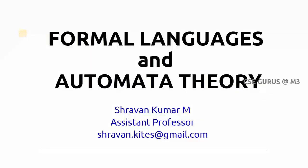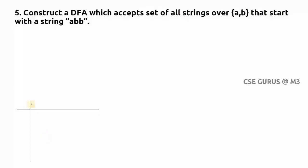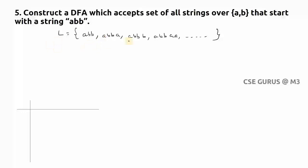Welcome to the class of Formal Language and Automata Theory. Coming to question number five: the question is 'start with a string ABB.' In the previous lecture we saw 'ends with ABB,' now it is 'starting with ABB.' The language consists of strings that must begin with ABB — it can have anything after ABB — so this is a language consisting of an infinite number of strings.